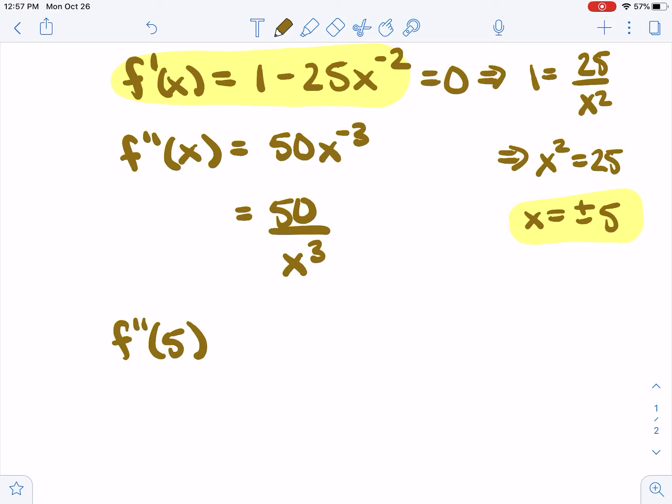So f double prime of 5 is positive and f double prime of negative 5 is negative. Negative 5 cubed is negative something, so we get negative.